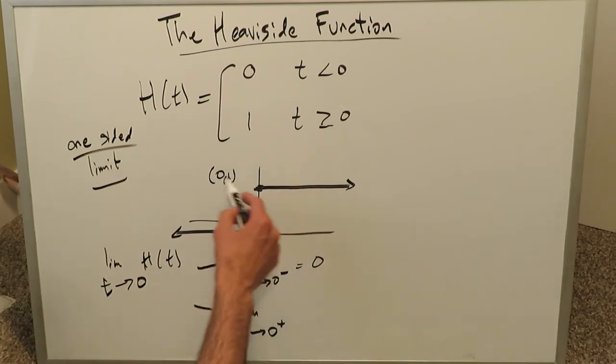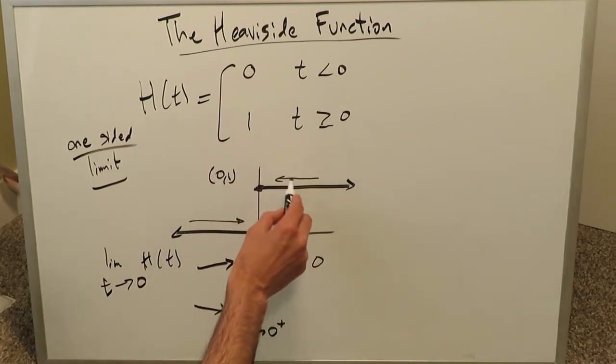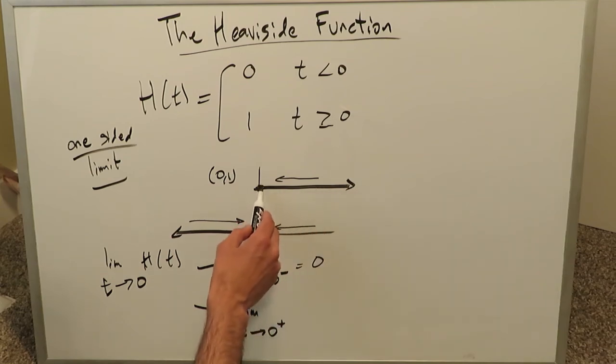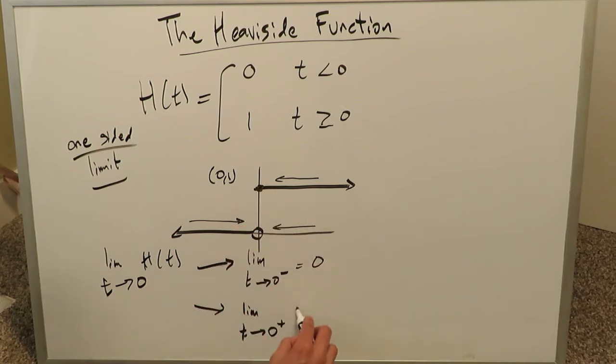When you're approaching this same function, the Heaviside function, but from the right, of course, you're looking here at your x axis values, you can put your arrow down here. When you're looking at it from here, you end up seeing that your function approaches a value of one.